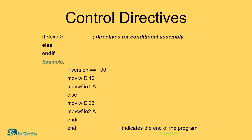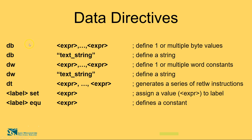Let's take an example of control directives. If an expression is evaluated — for example, if number one is greater than number two — then you use further statements like ELSE or ELSE IF. All these control directives can be used in your program. One such example: if version equals 100, then MOVLW D10, or MOVWF IO1A. Don't worry about what MOVLW or MOVWF mean — those are instruction sets we'll cover later. The main purpose here is to understand how IF/ELSE statements represent control directives.